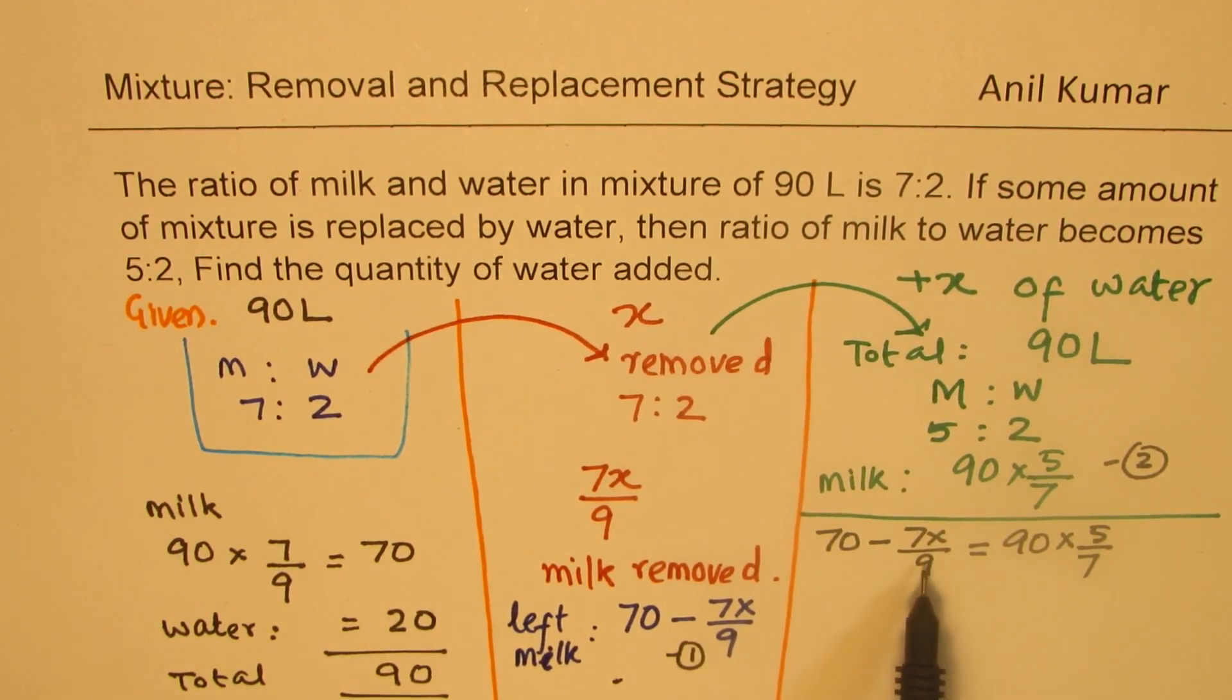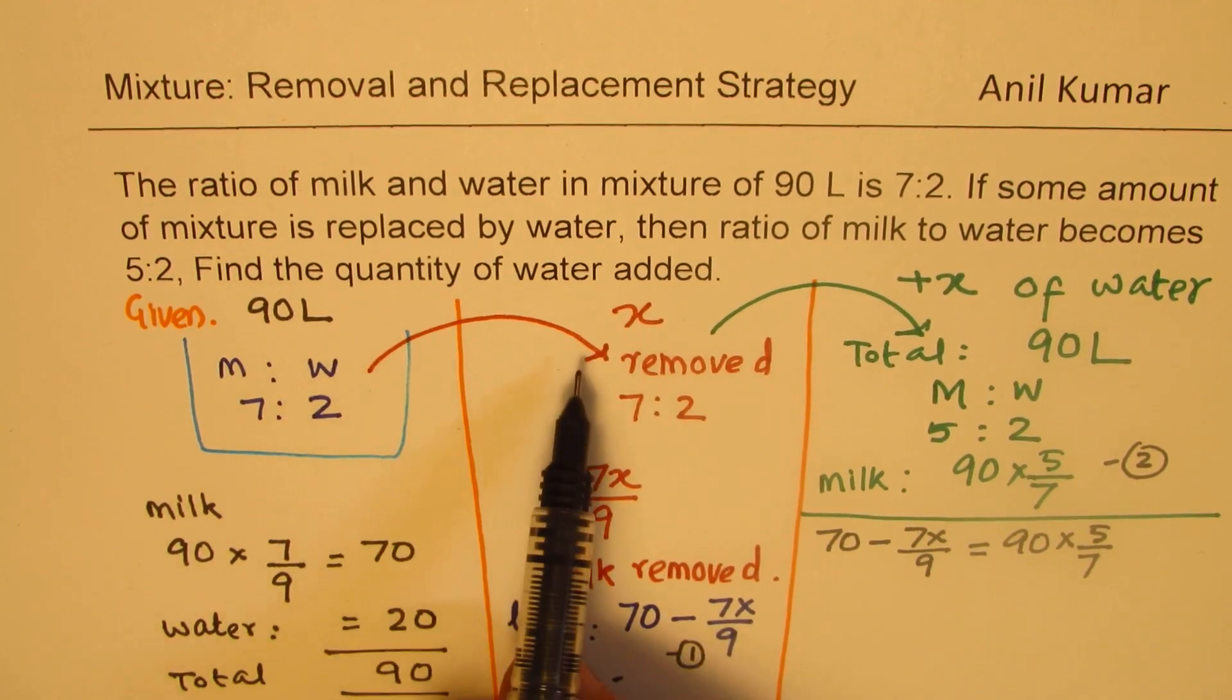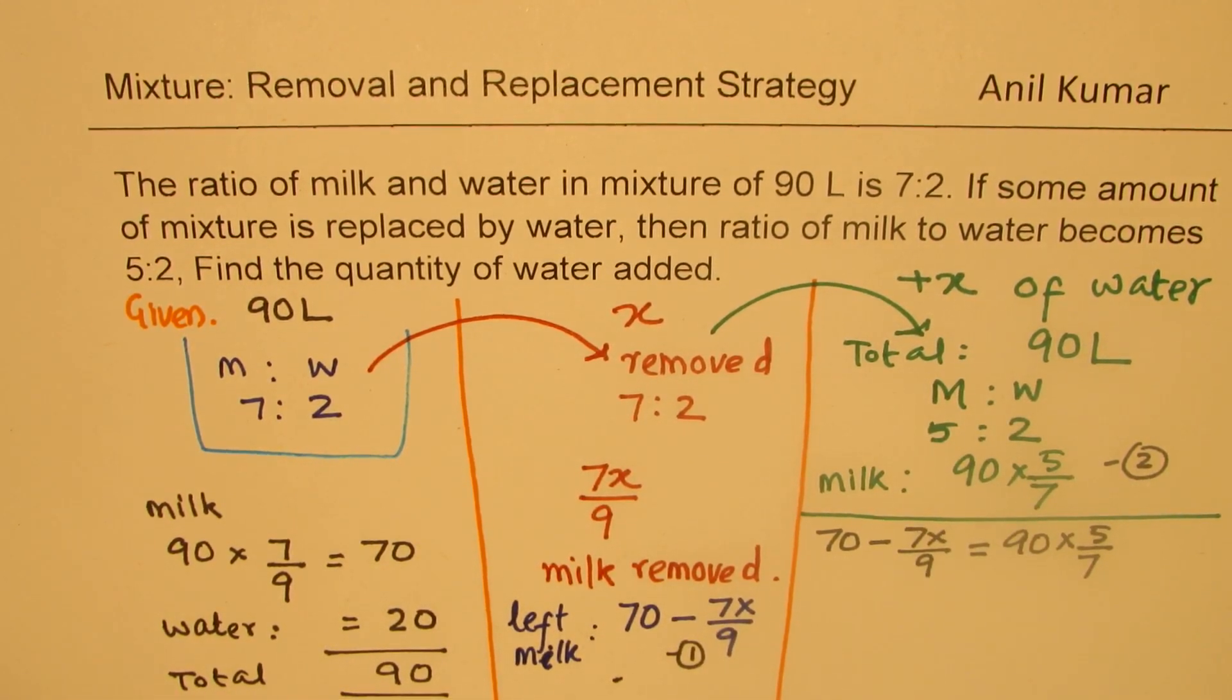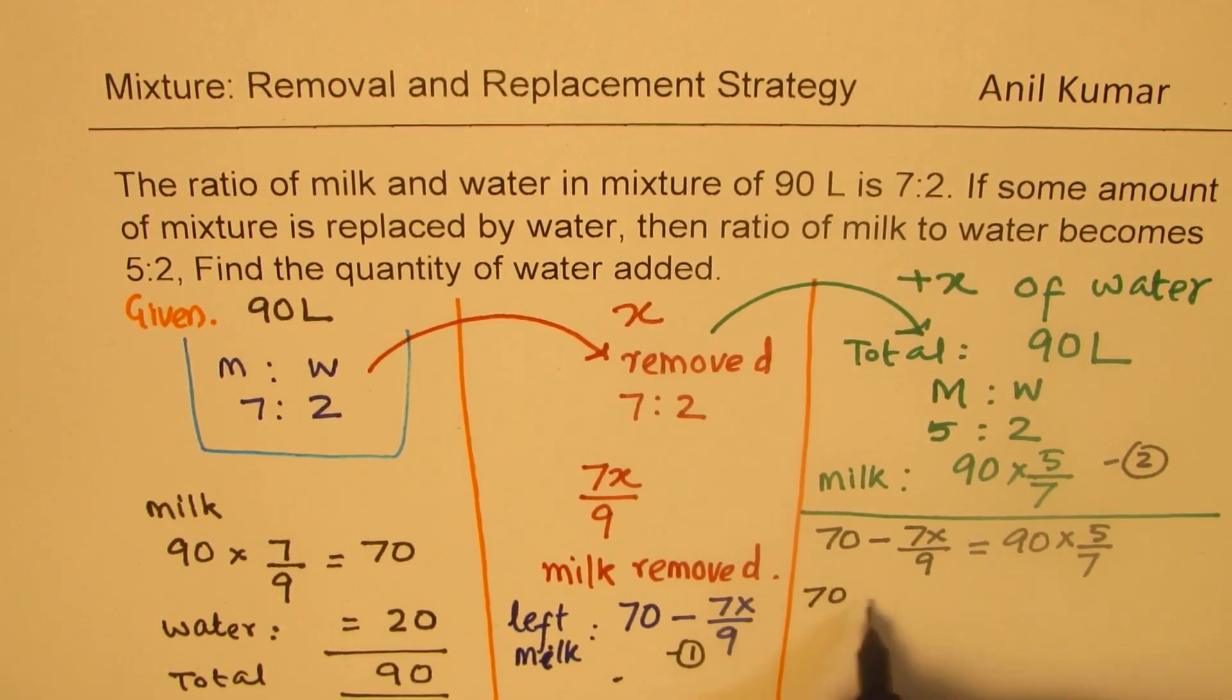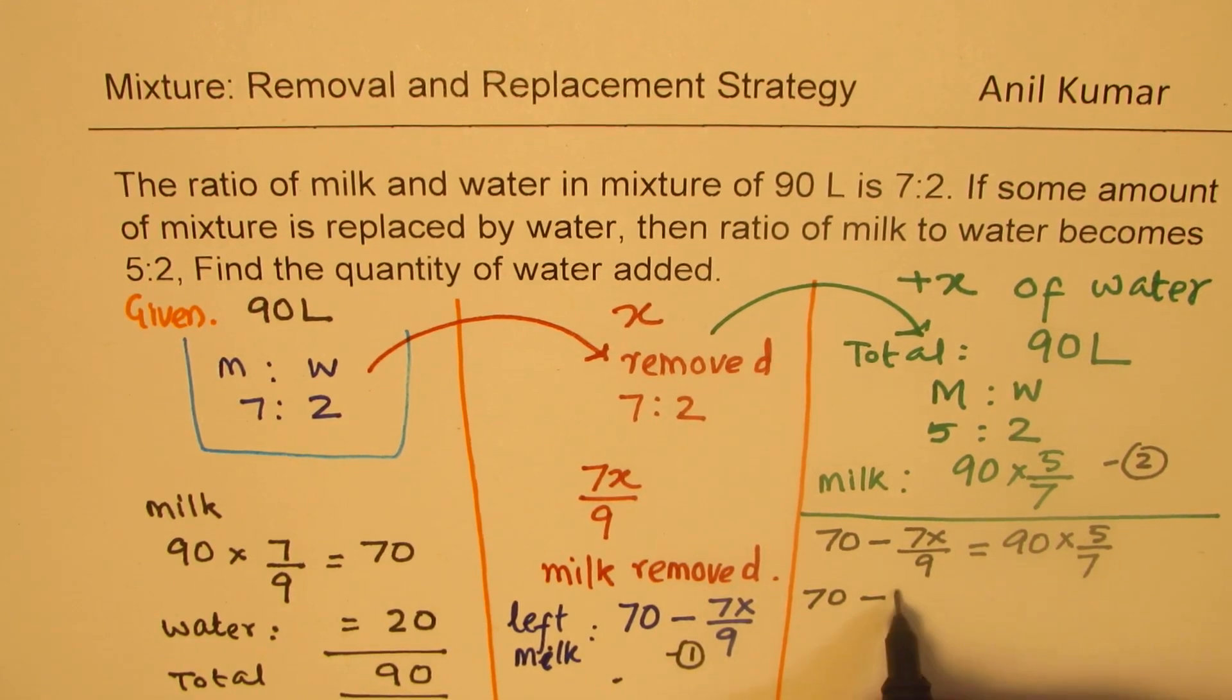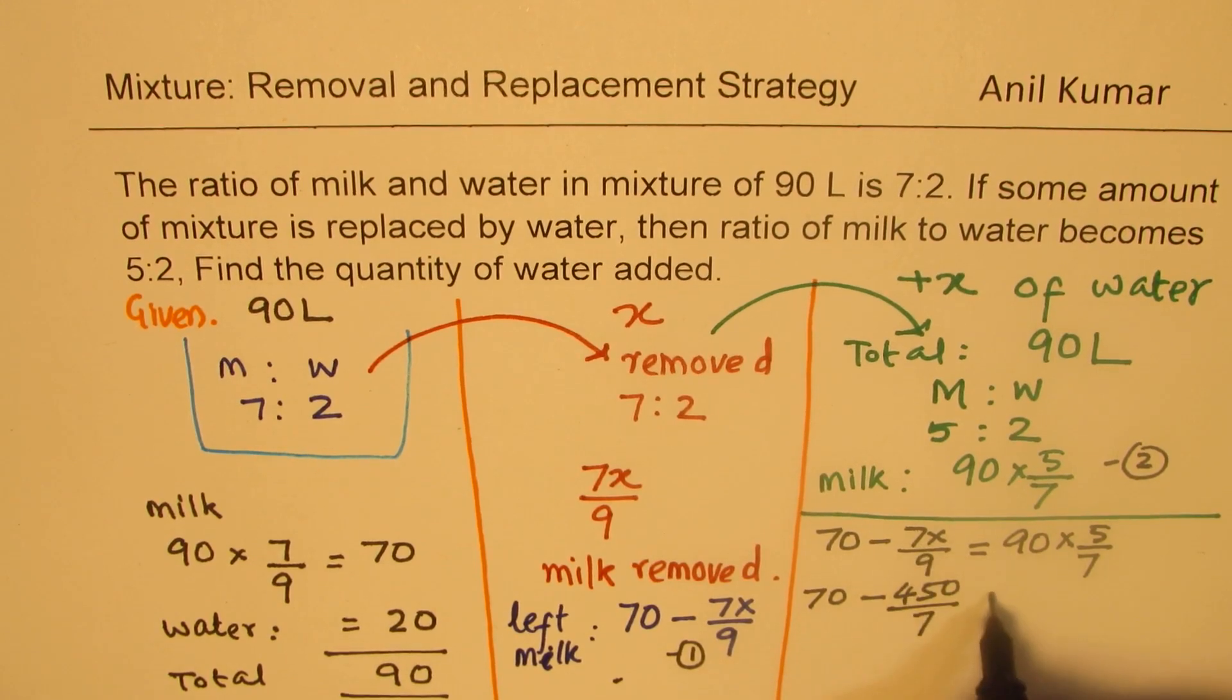Bringing these terms together, we get 70 minus, just multiply this, 9 times 5 is 45, so we get 450 over 7. Taking this to the right, we get 7x over 9.